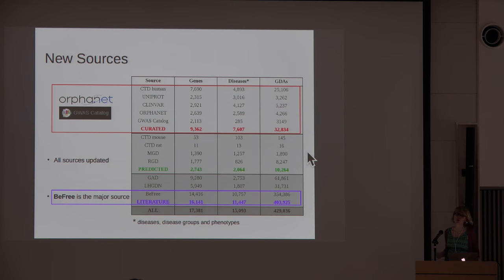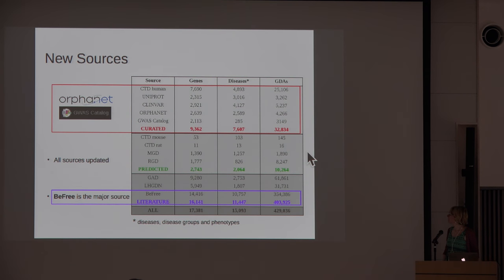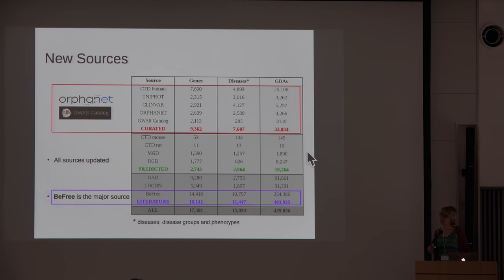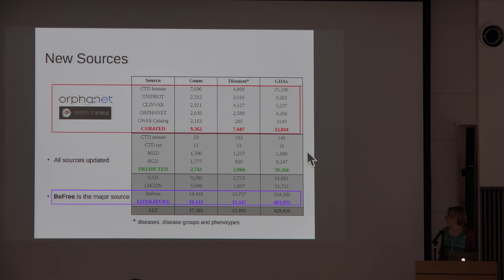All sources have been updated. The major source contributing to the most of DisGeNET in this new release, which has almost 500,000 associations, is the BEERF resource — a text mining dataset obtained from my last group in Barcelona.